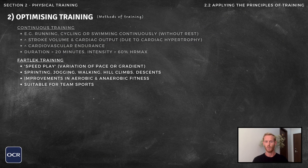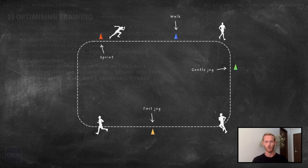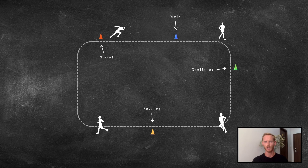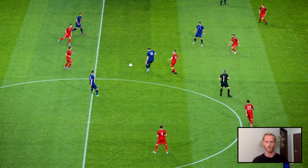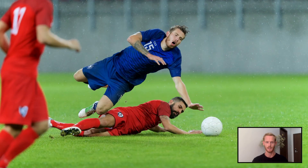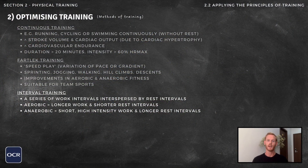Fartlek training is another form of continuous training, as no rest periods are taken. Fartlek means speed play, and is characterised by variations in pace and/or terrain. A typical Fartlek circuit may include sections for walking, jogging, sprinting, and hill climbs, and therefore targets both aerobic and anaerobic fitness components. It's a more varied and enjoyable training method than continuous training, and is particularly beneficial for team sports that involve both long periods of moderate activity and intermittent high-intensity bursts.